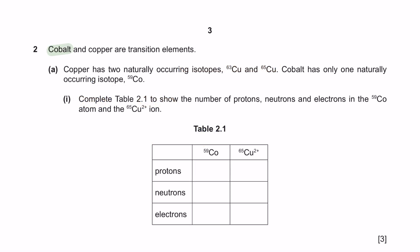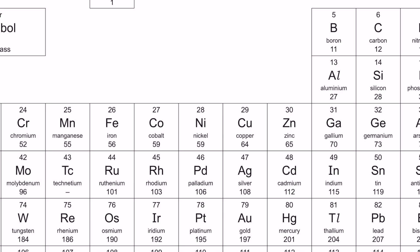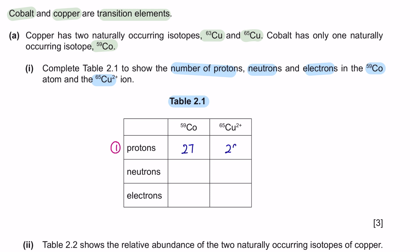Question 2. Cobalt and copper are transition elements. Question A: copper has 2 naturally occurring isotopes, cobalt has only 1. Part 1: complete Table 2.1 to show the number of protons, neutrons and electrons in the cobalt atom and the copper 2 plus ion. First, we need to find the protons number for cobalt and copper. This is cobalt and this is copper. The number at the top here is your proton number and the number bottom here is the nucleon number. So it's 27 for cobalt and 29 for copper.